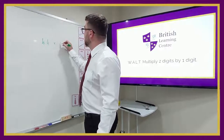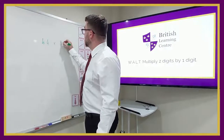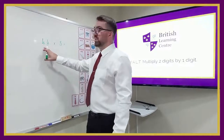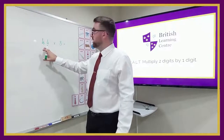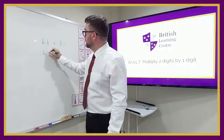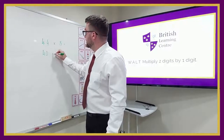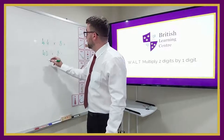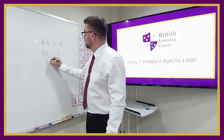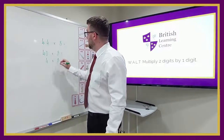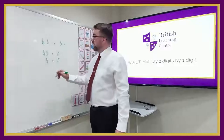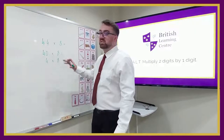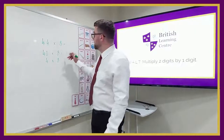So we could do a question like 44 times 8. Partitioning this number using our place value, we could do 40 times 8 and 4 times 8. For 40 times 8, if I make this number 10 times smaller I would do 4 times 8, which is 32.